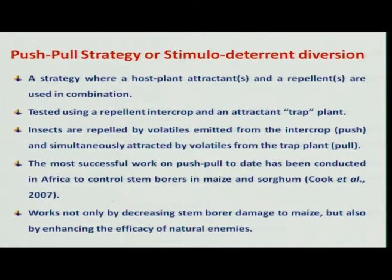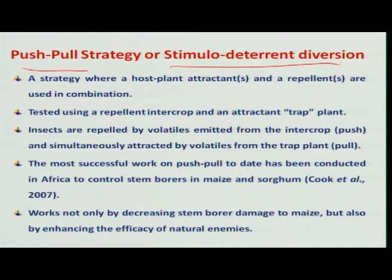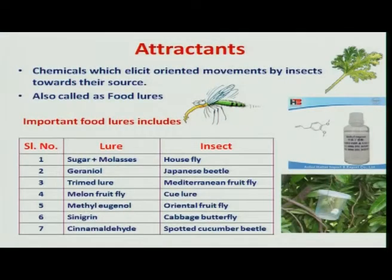Another natural method of modifying insect behavior is push-and-pull, or stimulo-deterrent diversion. Here, volatile chemicals produced by plants are utilized for the benefit of insect pest management. There are many attractants, repellents, and deterrents involved in pest management programs.